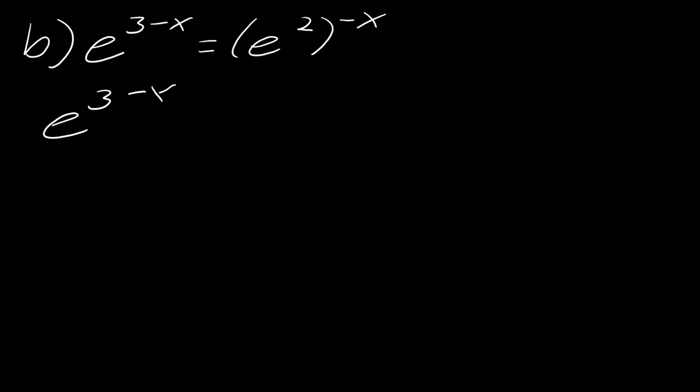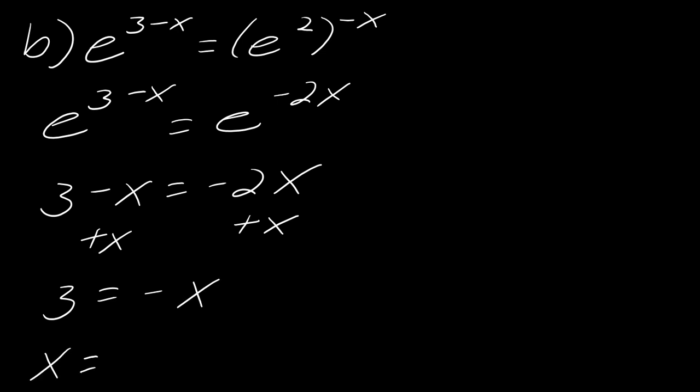So if I use my exponent properties, like this just becomes e to the negative 2x. That's really it. And then I can just take out the exponents. It looks like it's tricky. And I think it's like because the e is like, oh, it's something special. It's really not. E is just a number, right? It's not. It's just a number. So, okay. If I go ahead and I try to solve this. So I add x to each side. I get 3 equals negative x. So I divide both sides by negative 1 to get x equals negative 3. No problem.